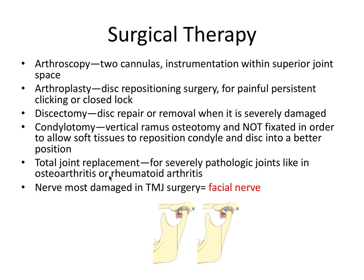Total joint replacement is for severely pathologic joints such as in osteoarthritis or rheumatoid arthritis. This represents the most aggressive end of the treatment spectrum, progressing from conservative to surgical options. It can involve an osteochondral bone graft — rib joints are the most common autogenous material used to replace the condyle — or total prosthetic joint replacement with a prosthetic condyle and prosthetic fossa. For the board exam: the nerve most likely damaged during TMJ surgery is the facial nerve, cranial nerve VII.